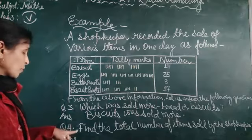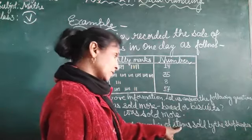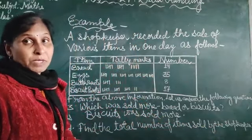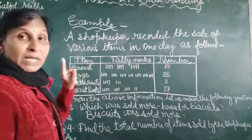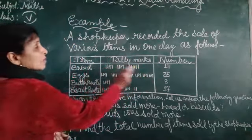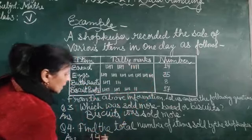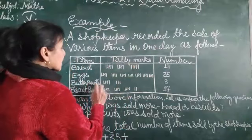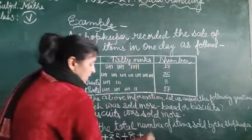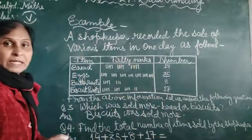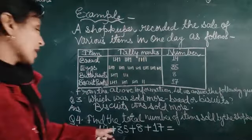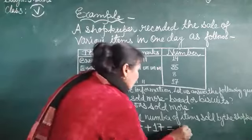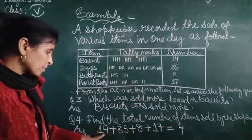Now, the question number four, find the total number of items sold by the shopkeeper. Now, the total number of items sold by the shopkeeper, that is what we will tell you. So, we will see our item name and the number given is here. First, bread is 14, so we will have plus, eggs is 35, butter packets is 8, biscuit packets is 17. Now, we will add all of them. So, we will add to our answer, 7 plus 8, 15 plus 5, 20 plus 4, 24. To get 2 plus 1, 3 plus 3, 6 plus 1, 7.